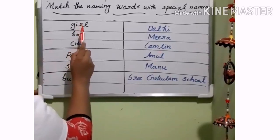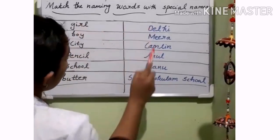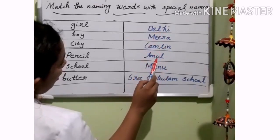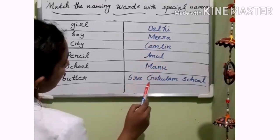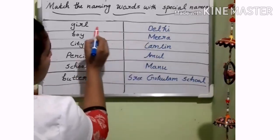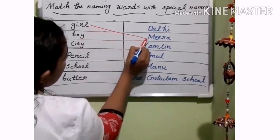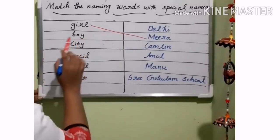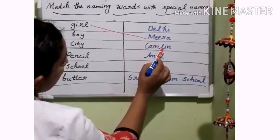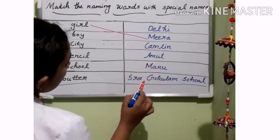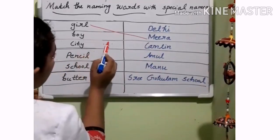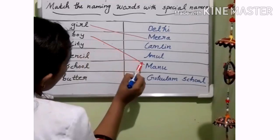The first word is girl. Which is the proper noun of girl here? That is Meera — very good, that is Meera. And the second one is boy. Which is the special name of a boy? Very good — boy, that is Manu. Very good.